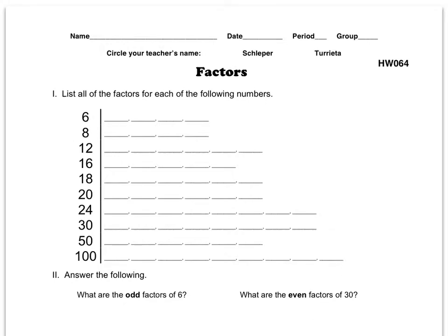Welcome to tonight's homework help for September 20th, 2012. Tonight we're going to start with factors. Question one: list all the factors for each of the following numbers. So you're going to list all the factors of 6, all the factors of 8, 12, and so on.